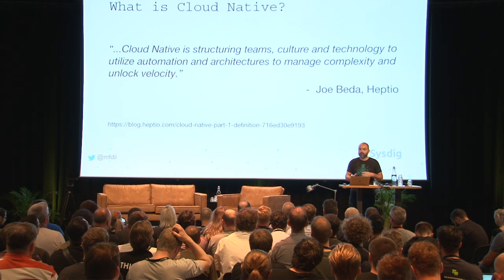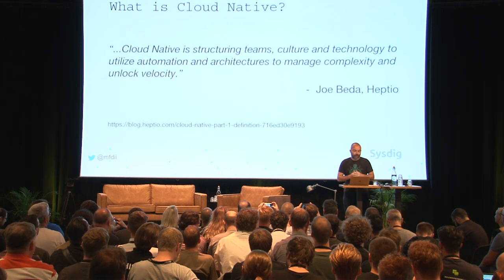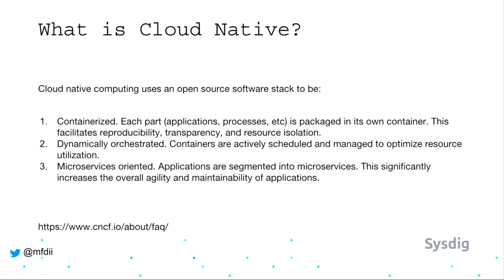There are other definitions as well. Joe Beda of Heptio defines it as: 'Cloud native is structuring teams, culture, and technology to utilize automation and architectures to manage complexity and to unlock velocity.' The key component shared between Adam Jacob's DevOps definition and Joe's cloud native definition is unlocking velocity — how can we move faster as an organization? Interesting too is that Joe's definition has a component of structuring teams and culture, but the CNCF definition has absolutely nothing about teams or culture.